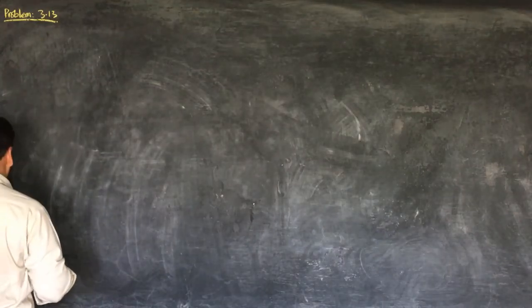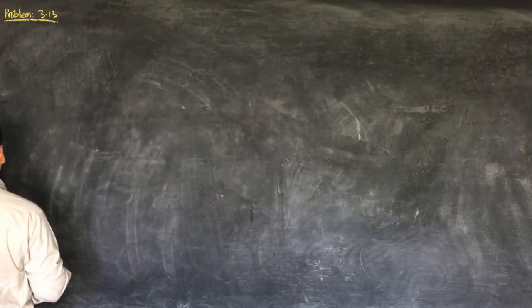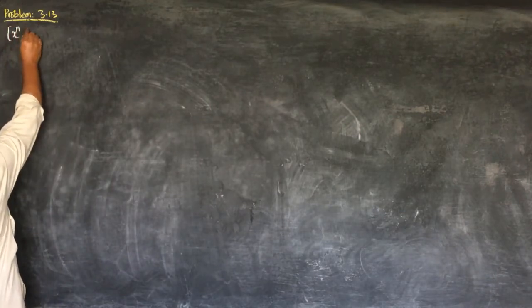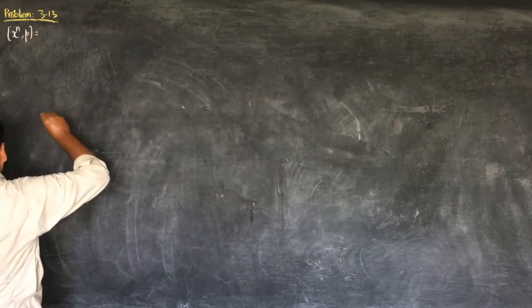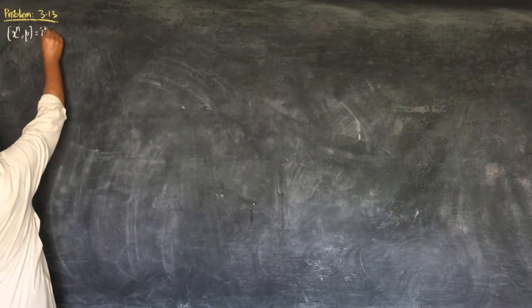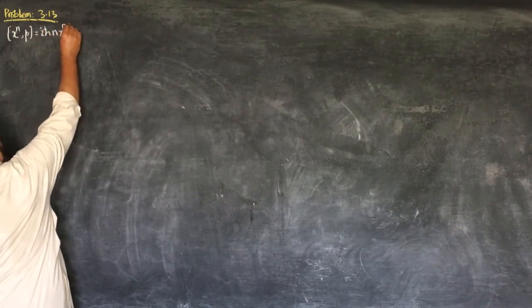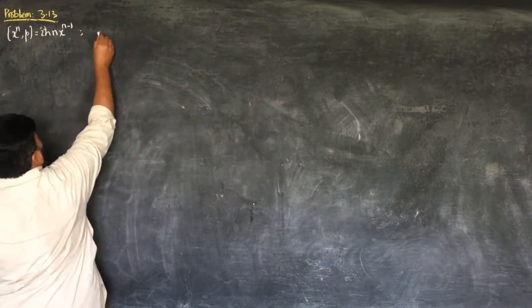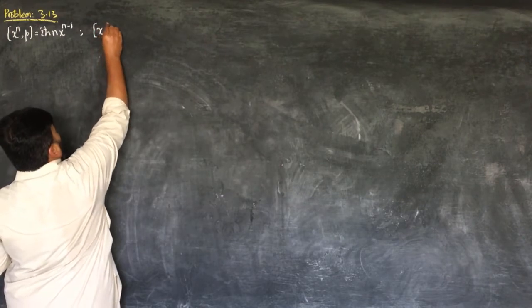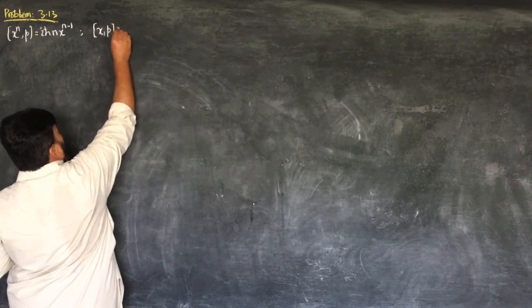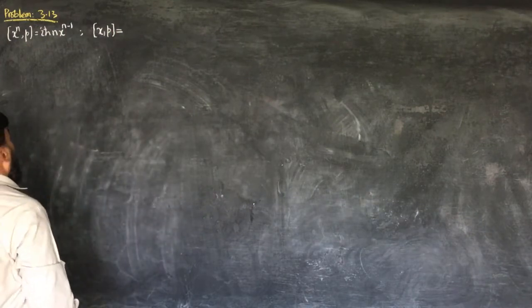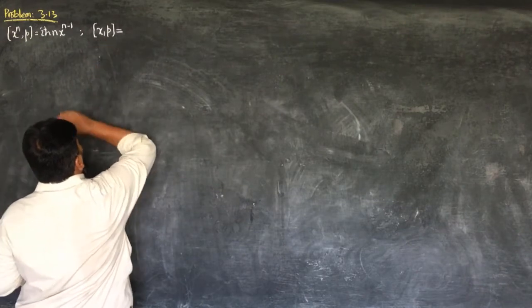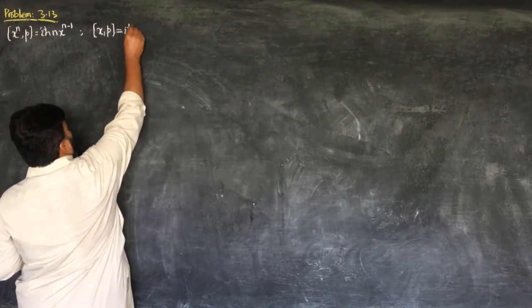In problem 3.13, we are asked to find the commutation relation [x^n, p] and what it is equal to. They prove that this is equal to iℏn·x^(n-1). We have already proved the canonical commutation relation [x, p] = iℏ.